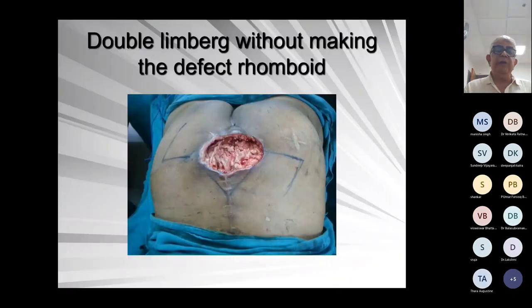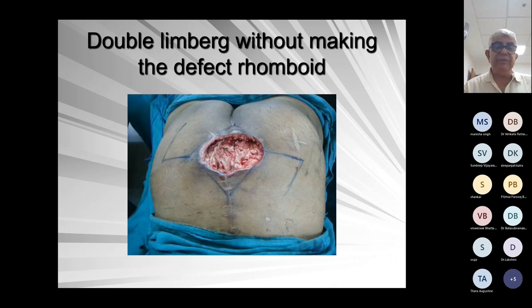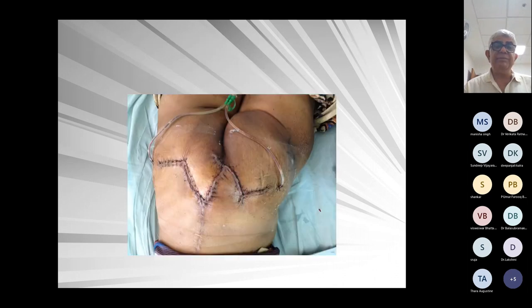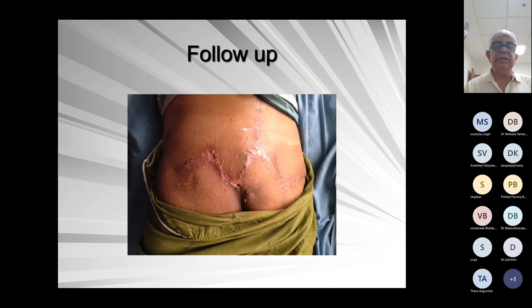You can also do innovations. For one of my patients, I did not want to make it rhomboid, so I just took the flap and saw how it came. You can always customize as per need using the same principles. This is the late post-op of a rhomboid flap — not into a rhomboid defect — but using the skin without discarding it.